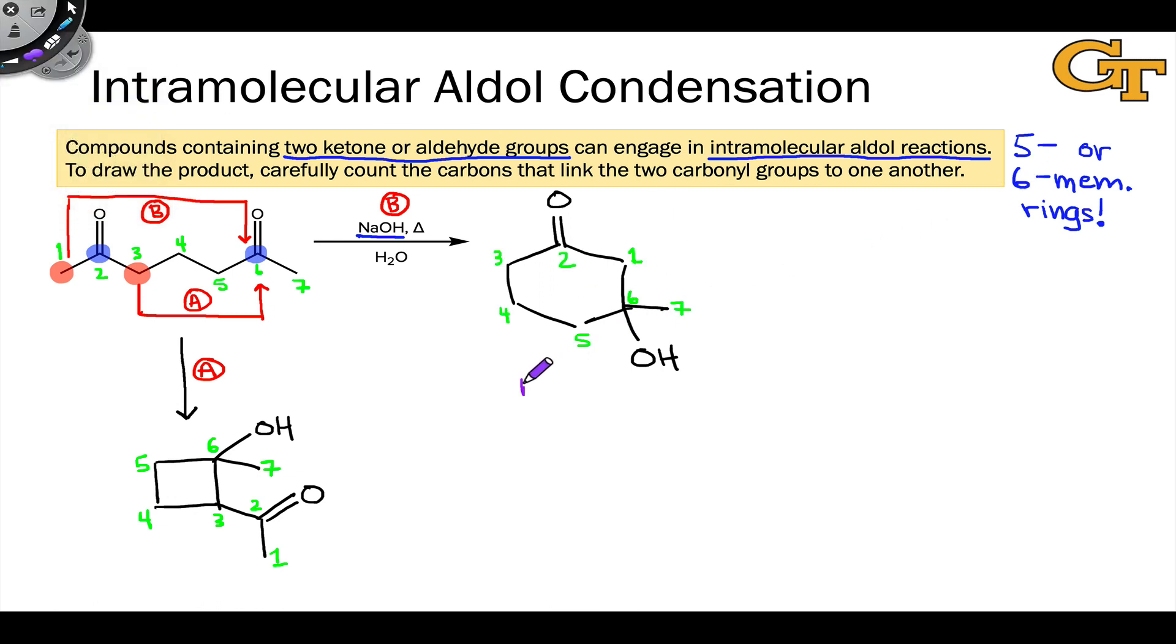6-membered rings are relatively stable because of a lack of various types of strain in the ring structure. 4-membered rings on the other hand are much less stable. They suffer from bad eclipsing strain and painful bond angles as suggested by their Lewis structures.